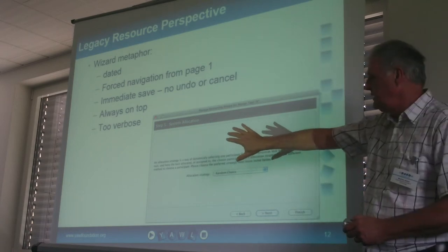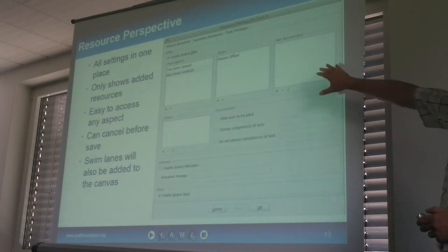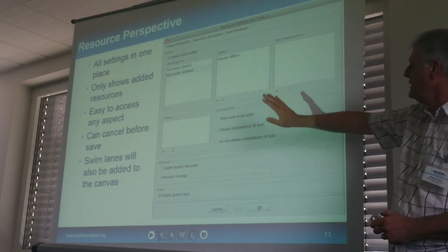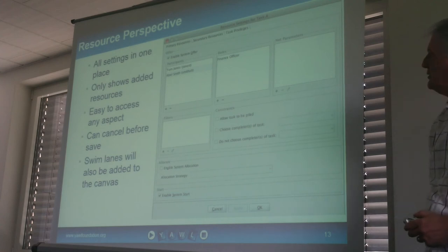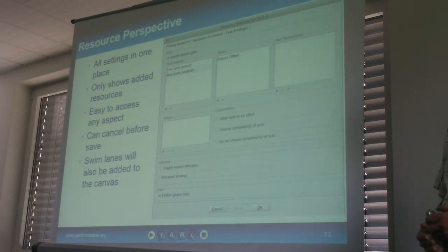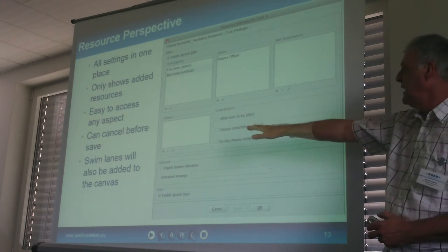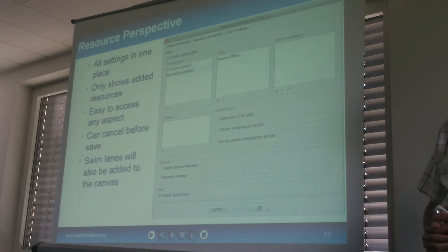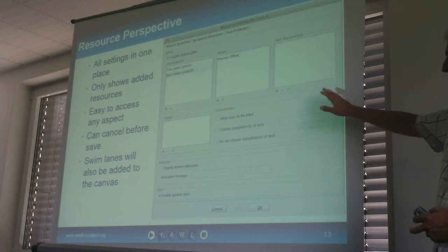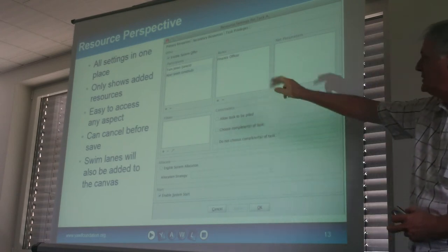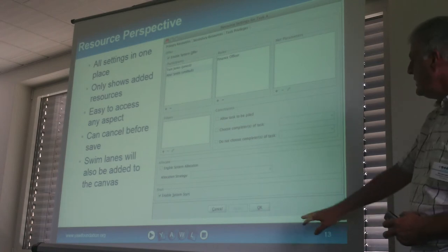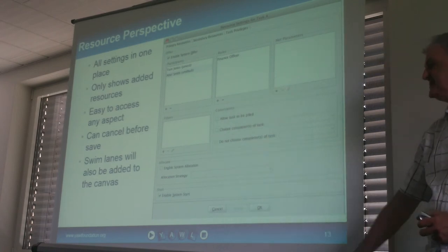All of the information captured across those screens is more easily captured in a single screen. Rather than listing all your participants and all your roles, clicking the plus button at the bottom of participants will open a list where you can choose the ones you want — showing only those relevant to this task. You can add filters there, any number of filters across your distribution sets, and add constraints. You can choose by ticking a box whether it's a system offer or a user offer, and set application and start as well. You can always cancel out any changes — nothing is saved until you press OK.